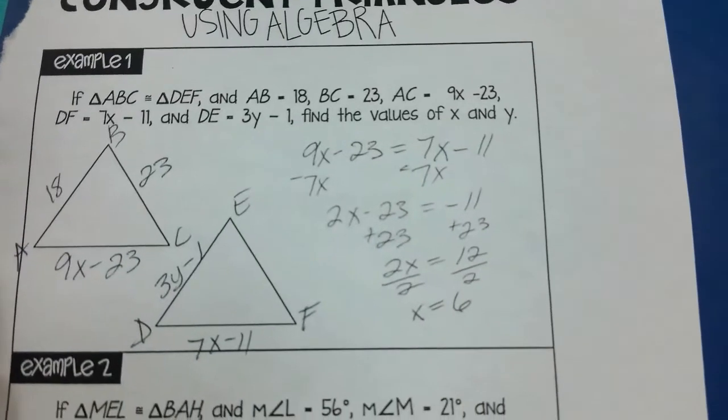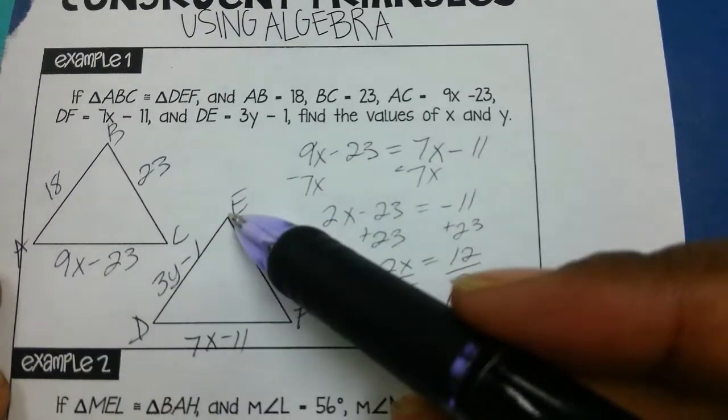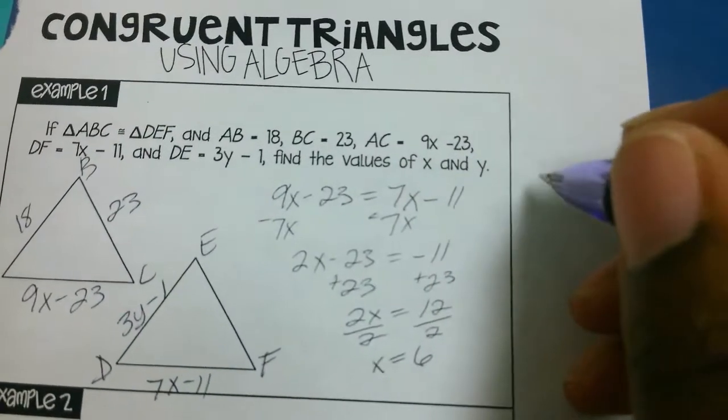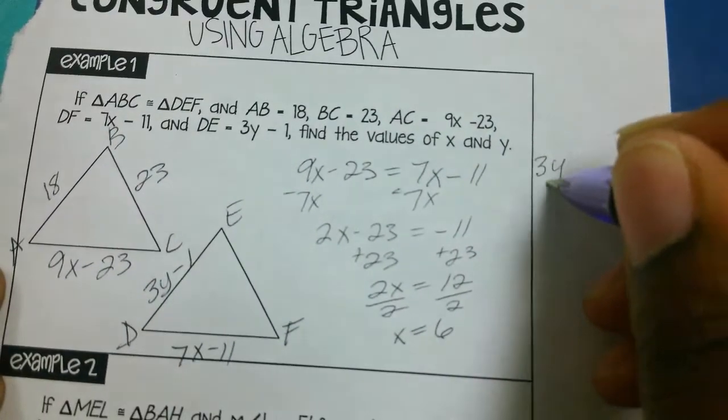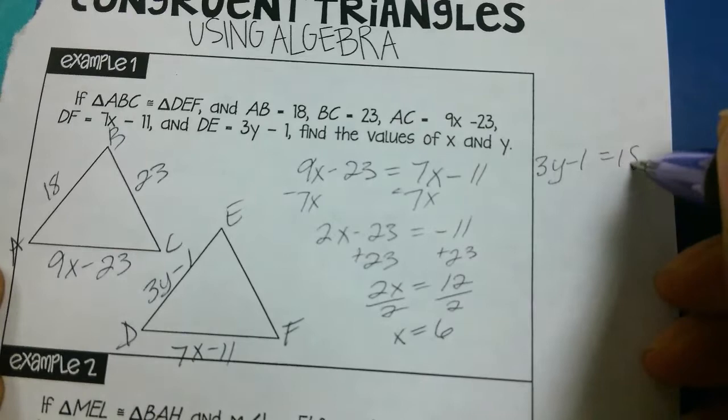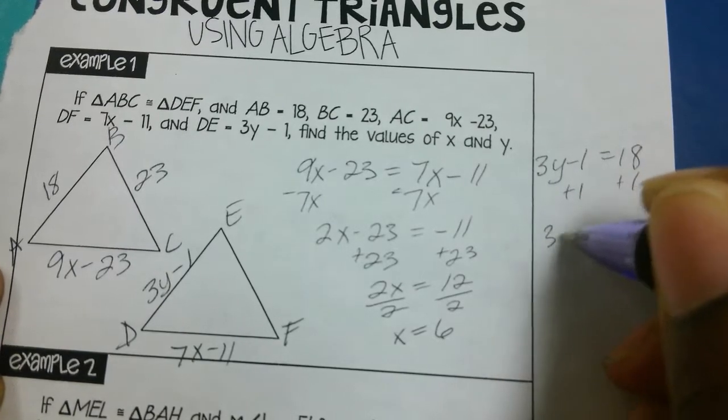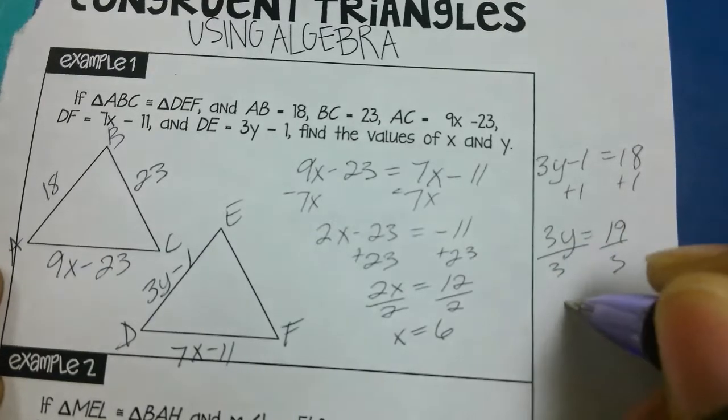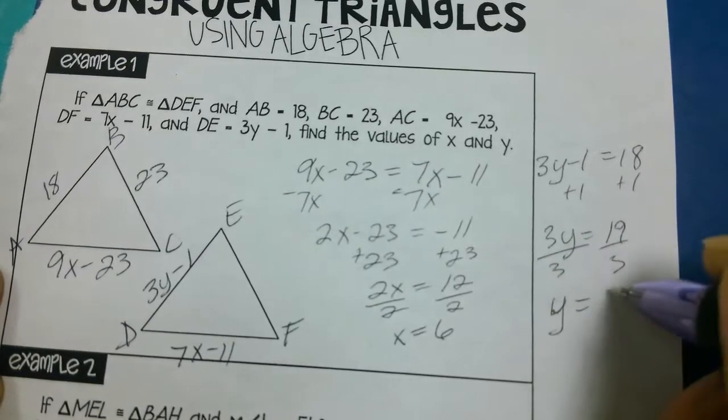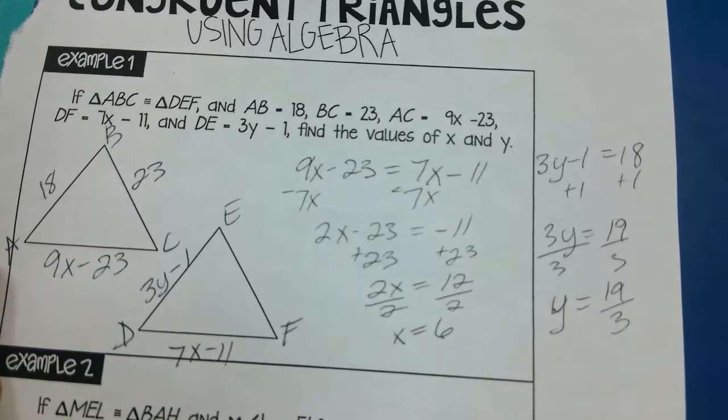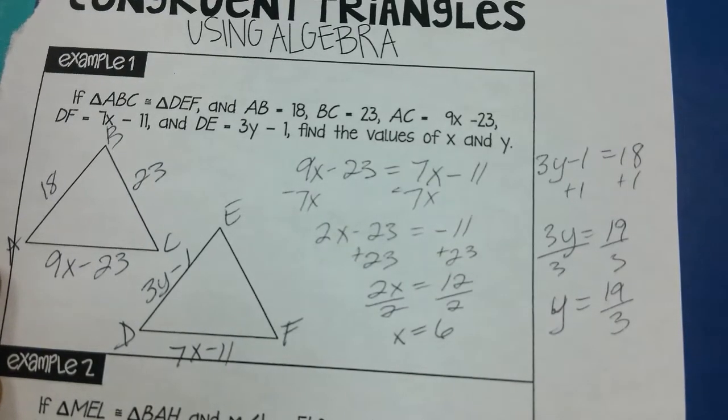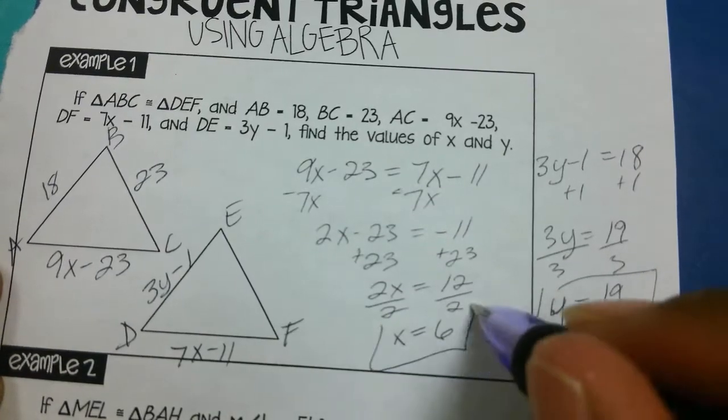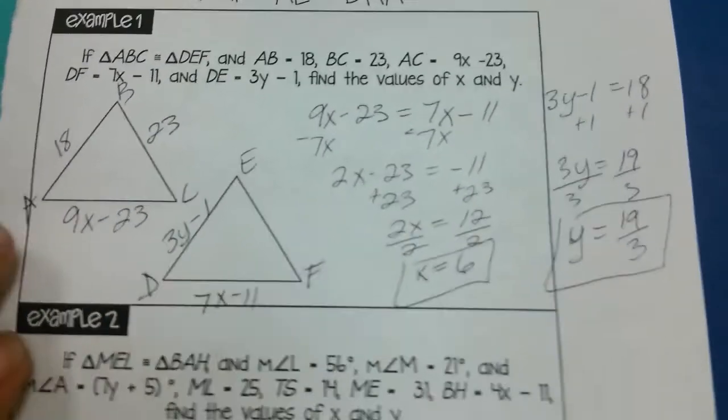Okay, so that helped me solve for x. I need to solve for y, and I see that DE has the y in it. What corresponds to DE is my AB, so those are the two sides I have to use. So 3y minus 1 equals 18. Add 1 to both sides: 3y equals 19. Divide both sides by 3: y equals 19 over 3. I'm just going to leave it just like that because I know that's not going to simplify to a whole number.